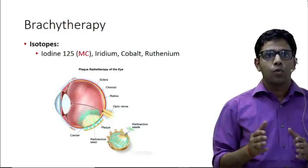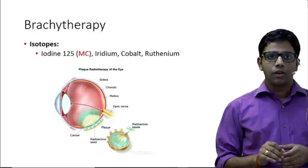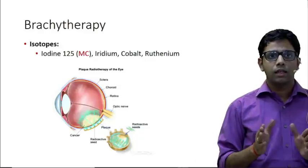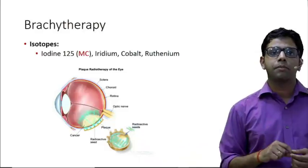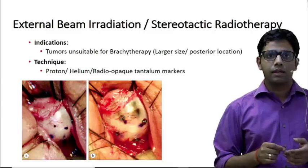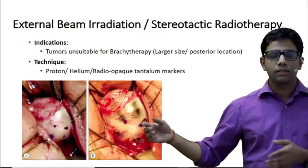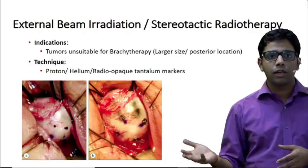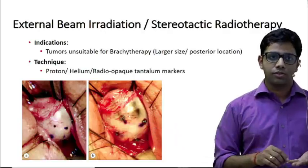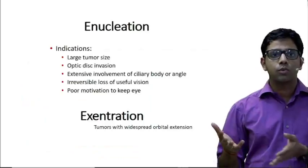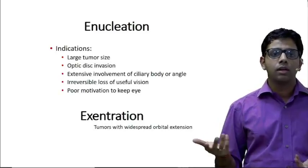For medium tumors, or small tumors that are progressing, we do localized therapy known as brachytherapy. The most common isotope used is iodine to irradiate the tumor — this is known as plaque brachytherapy. If the tumor is very posterior or very large, plaque brachytherapy cannot be performed. In those cases we go for external beam irradiation or stereotactic radiotherapy. For very posterior lesions close to the optic nerve, we use tantalum markers with proton or helium beam therapy. If the tumor is very large, involving the optic disc or ciliary body, causing irreversible painful vision loss, we remove the entire eyeball — a surgery known as enucleation.